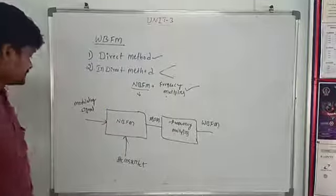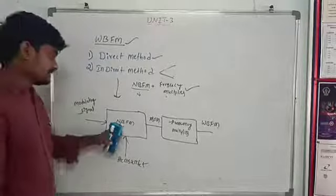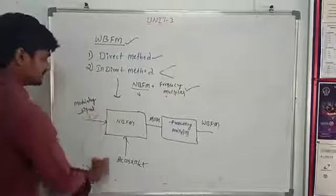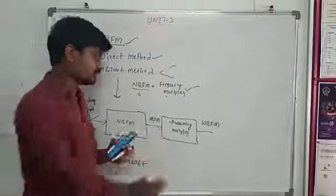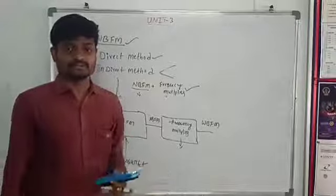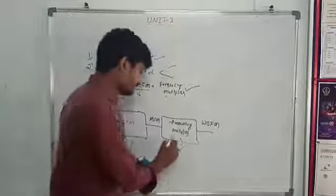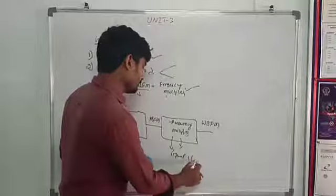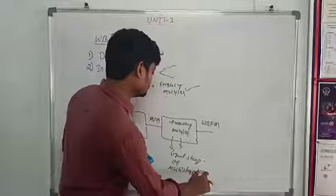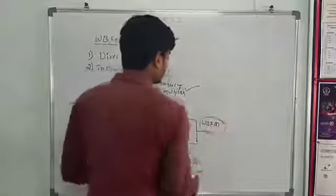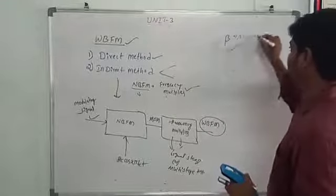This is the block diagram of the indirect method of generating wide band FM. For narrow band FM, we have two signals: the modulating signal and the carrier signal. We get the narrow band FM output, and then pass it through a frequency multiplier. Using a multi-stage frequency multiplier, we can generate wide band FM. The modulation index beta greater than one gives wide band FM.